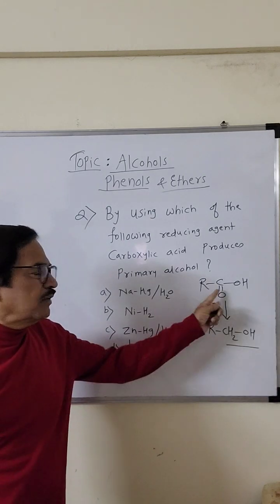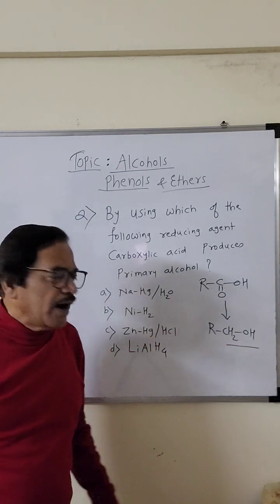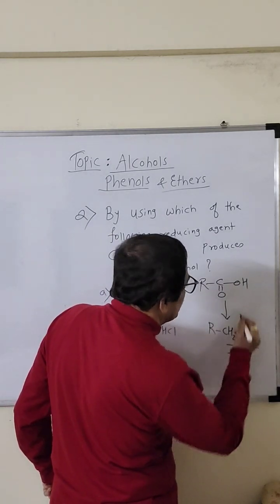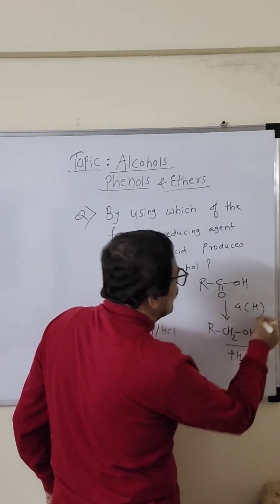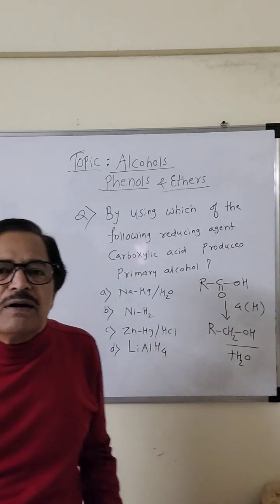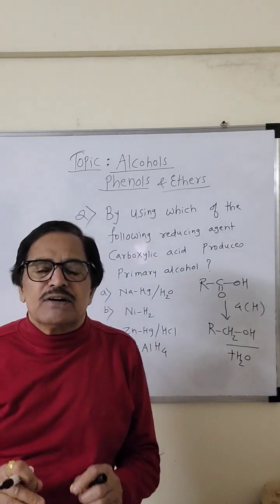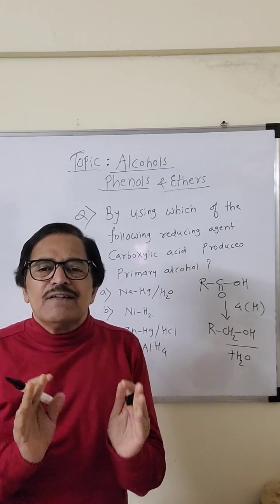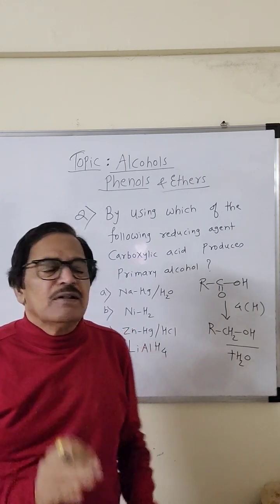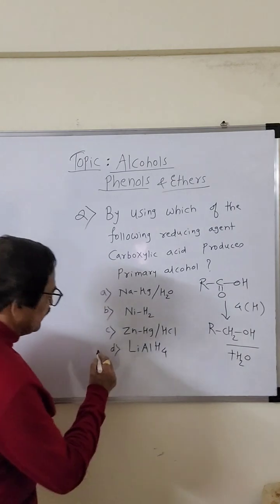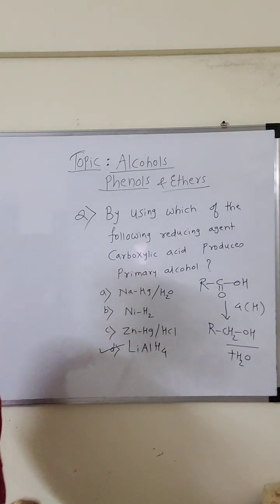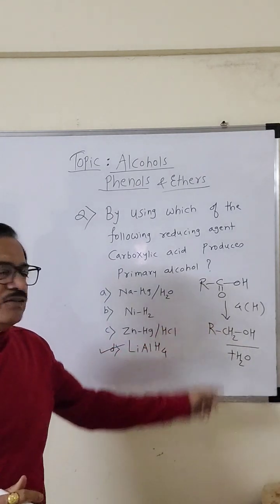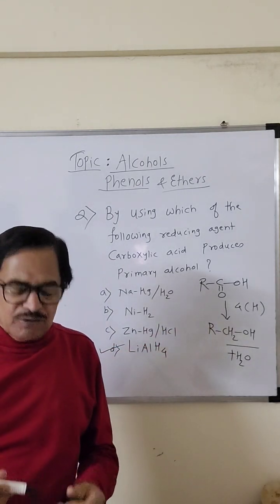Oxygen will leave with two hydrogens to form H₂O, and those two hydrogens will come to the carbon. So four H atoms in total will be required, meaning a strong reducing agent is needed. If you read the reaction properly from the book, you will see that lithium aluminium hydride is a strong reducing agent which can bring about this conversion. Thanks a lot.